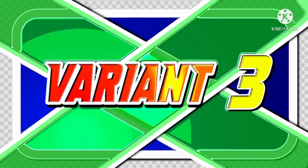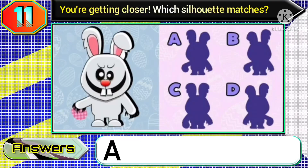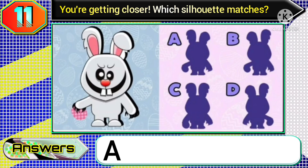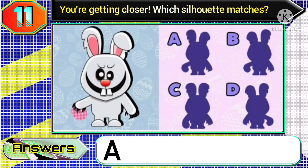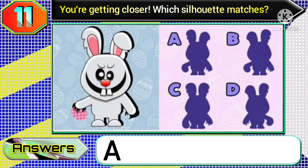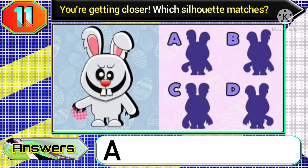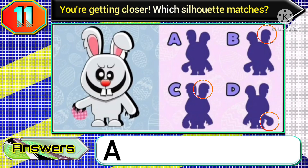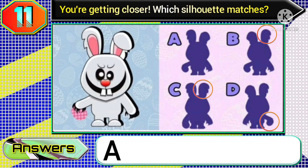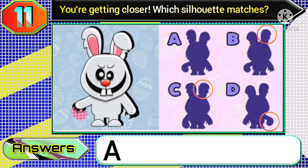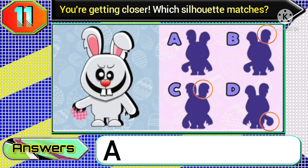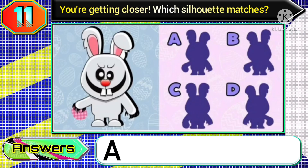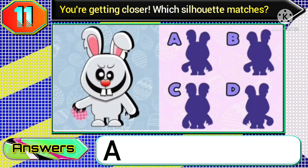At last, in variant three of this question, for this type of image the correct answer will be option A silhouette, because the other three options are wrong. So option A is the correct answer for this type of image.